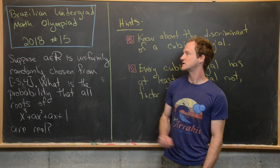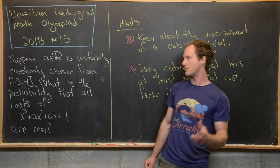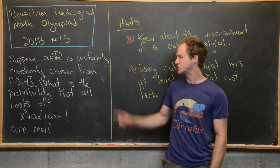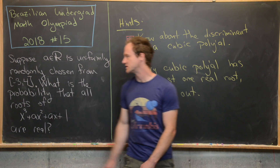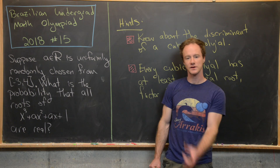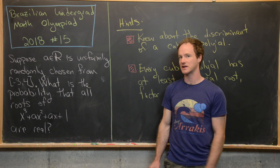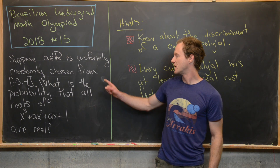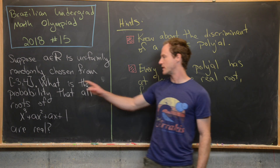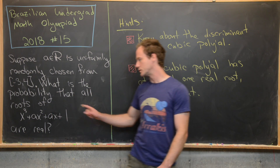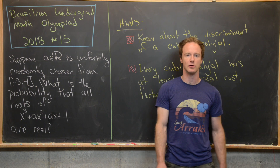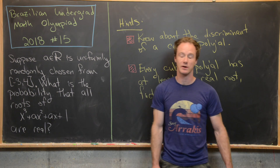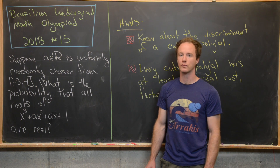We suppose that A is a real number uniformly and randomly chosen from the closed interval minus 3 to 4 — notice that has length 7, which is important. Our goal is to determine the probability that all the roots of the polynomial x cubed plus ax squared plus ax plus 1 are real.